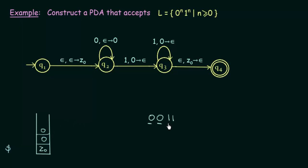Then we get 1, and state Q2 transitions to Q3. When we get input 1, we check if 0 is the topmost symbol on the stack — yes it is — and it must be popped, so we remove that 0 from the stack. Then we get another 1; in state Q3, on input 1, we again check if 0 is on top — yes — and it is popped.